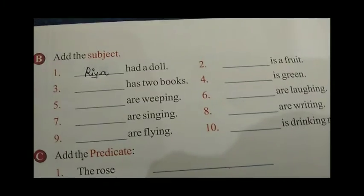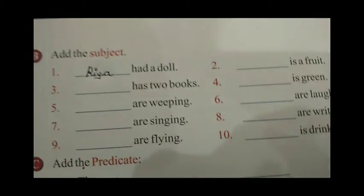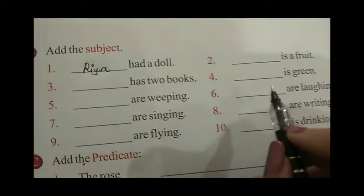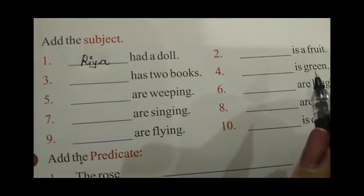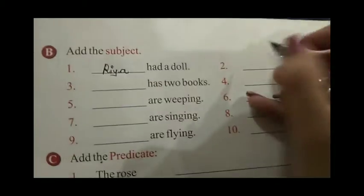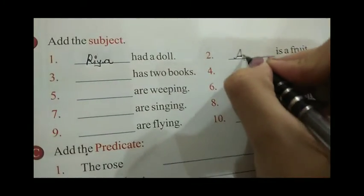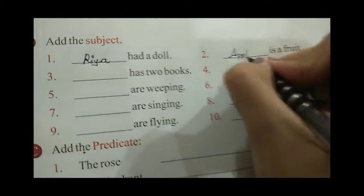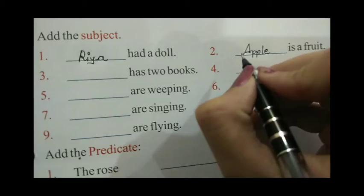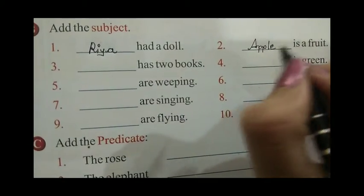The second one is: dash is a fruit. So here we can write any fruit name. Apple is a fruit — A, double P, L, E — apple is a fruit.